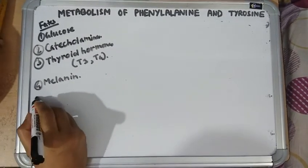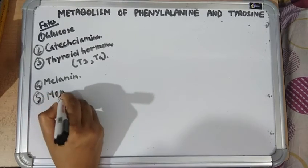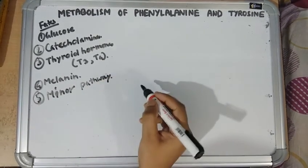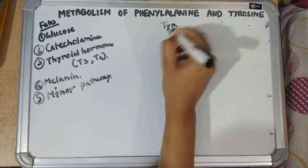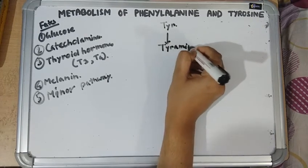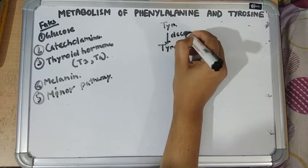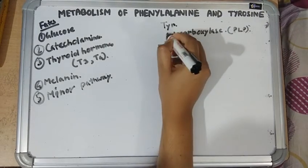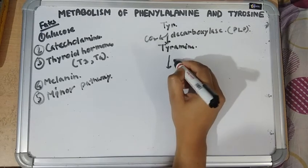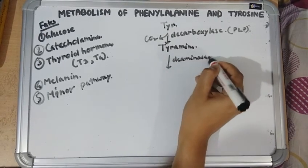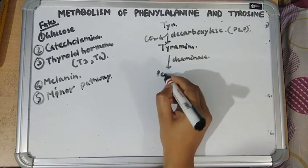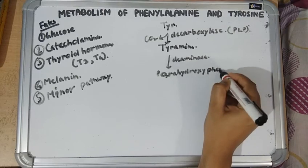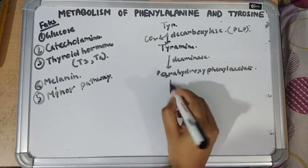There is also a minor metabolic pathway of tyrosine where tyrosine is converted into tyramine by tyrosine decarboxylase, which requires PLP as the coenzyme. Tyramine then undergoes deamination by deaminase enzyme to form para-hydroxyphenylacetate, which is excreted in the urine.